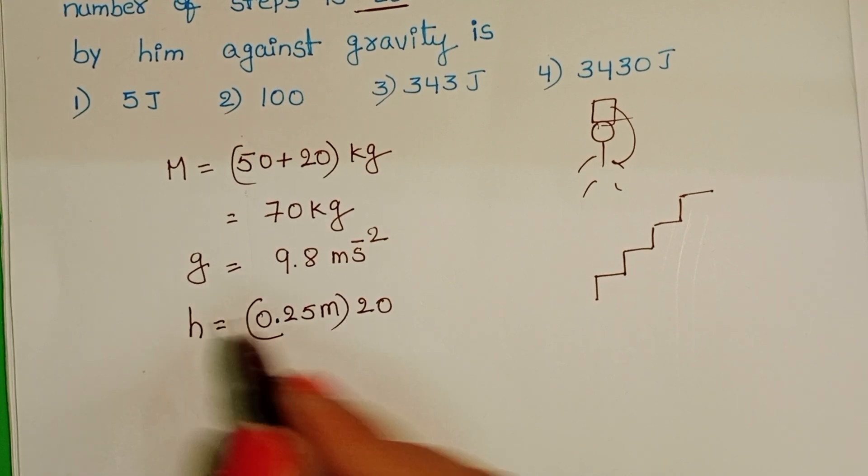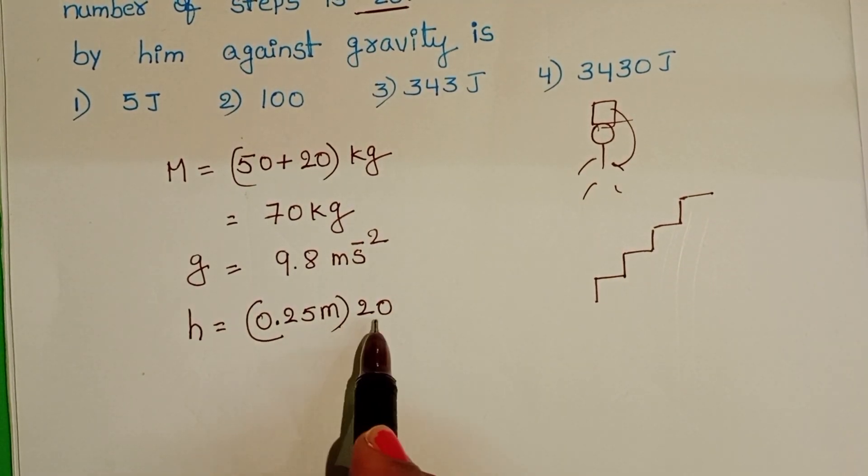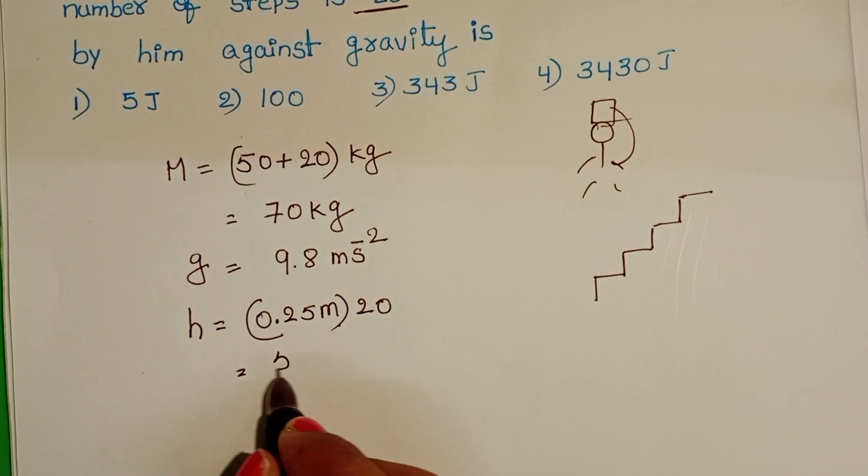So, total height equals height of each step times total number of steps, which is 5 m.